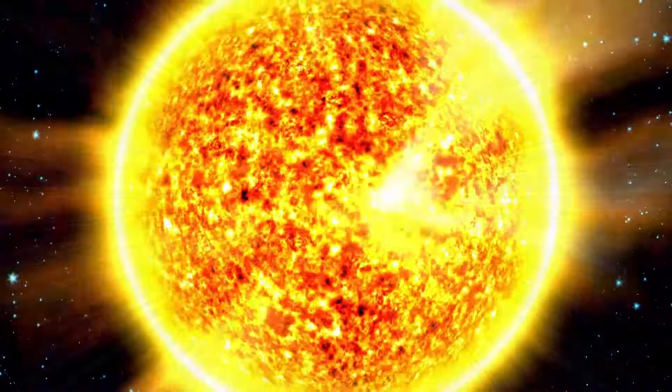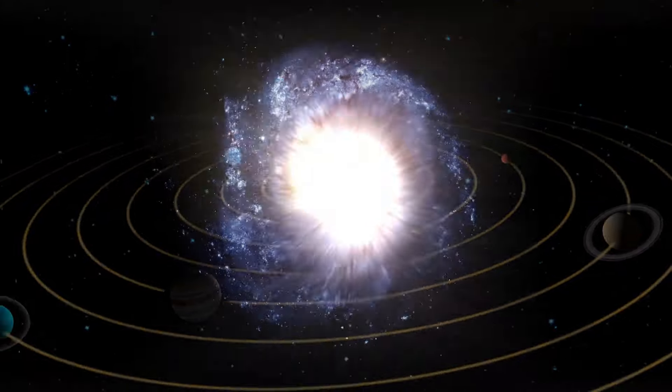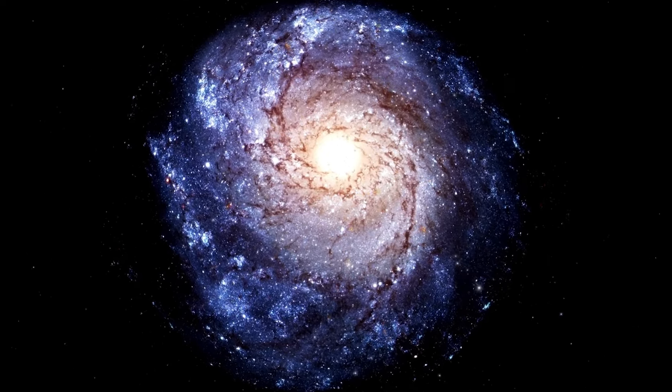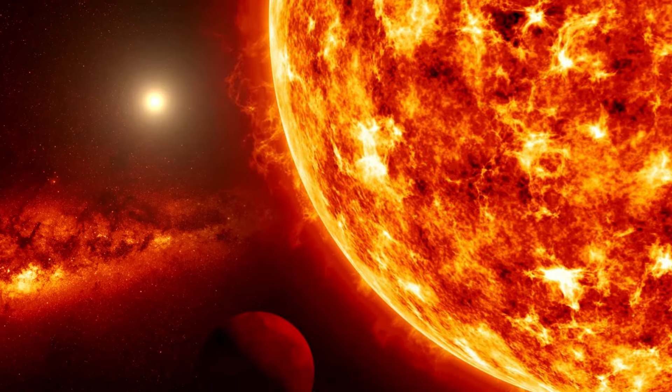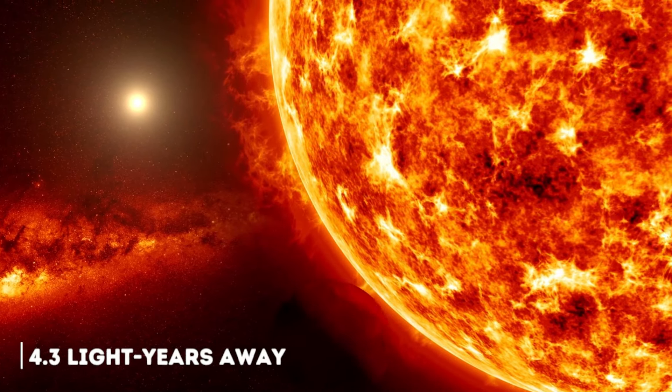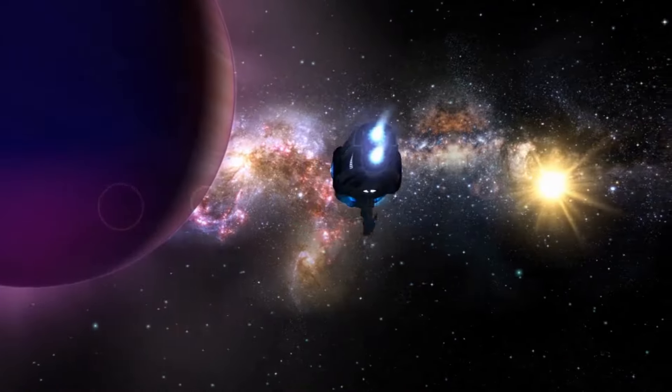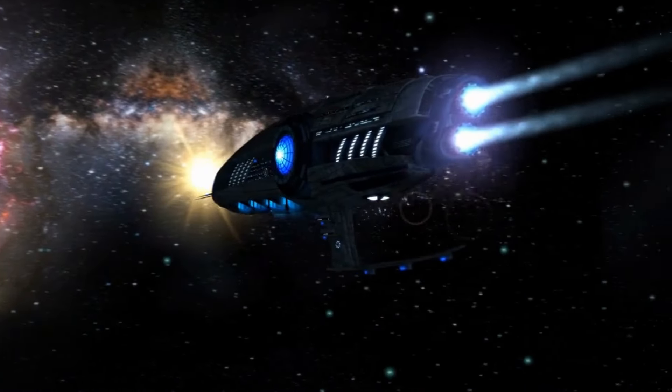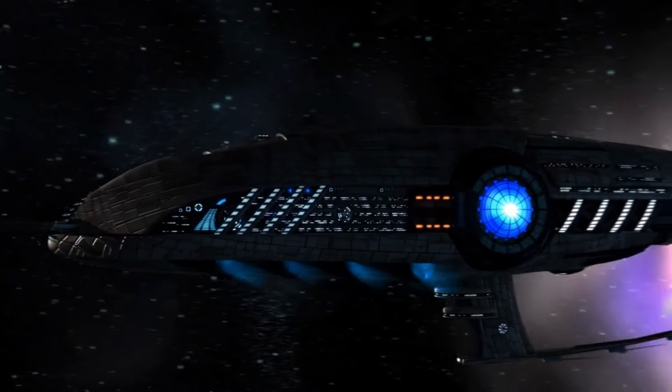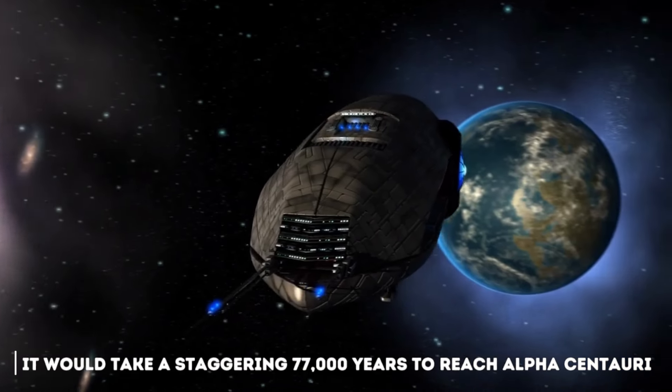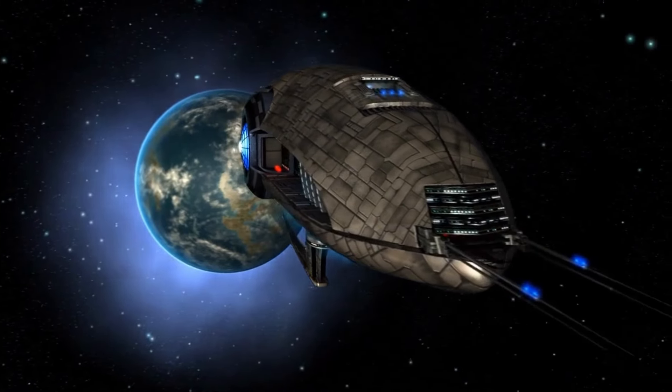Although our solar system is vast, it is dwarfed by the enormity of the Milky Way galaxy. This galaxy contains approximately 300 billion stars, each of which probably has its own planetary systems. Our nearest neighboring star, Alpha Centauri, is 4.3 light years away, which means that if we traveled at the speed of light, it would take us 4.3 years to get there. Now imagine the time it would take to travel to the next star system, Alpha Centauri. Even if something were traveling at the same speed as the Voyager probe, that is 38,000 miles per hour, it would take a staggering 70,000 years to reach Alpha Centauri. This shows us the immensity of the distances involved in exploring the cosmos.